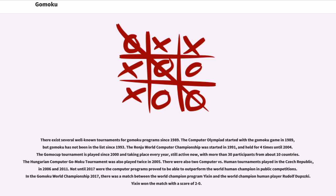In the Gomoku World Championship 2017, there was a match between the world champion program Yixin and the world champion human player Rudolf Dupszki. Yixin won the match with a score of 2-0.